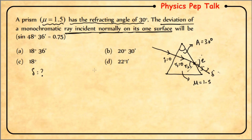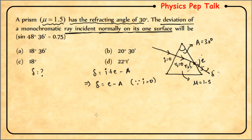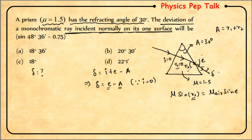The expression for deviation is: δ = I + e - A, which implies δ = e - A (since I = 0). We know that r1 + r2 = A, and since r1 = 0, r2 = A = 30°. Applying Snell's law at the second refracting surface: μ × sin(r2) = μ_air × sin(e).